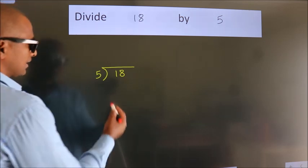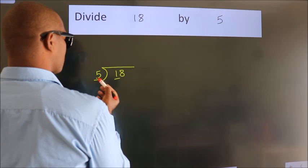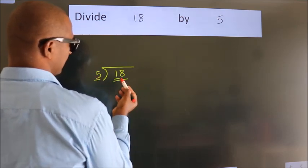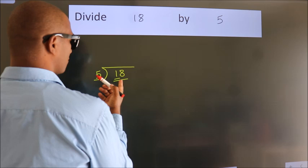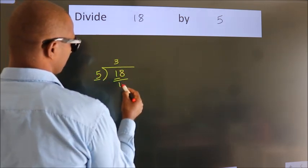Next. Here we have 1, here 5. 1 smaller than 5. So we should take two numbers, 18. A number close to 18 in 5 table is 5 threes, 15.